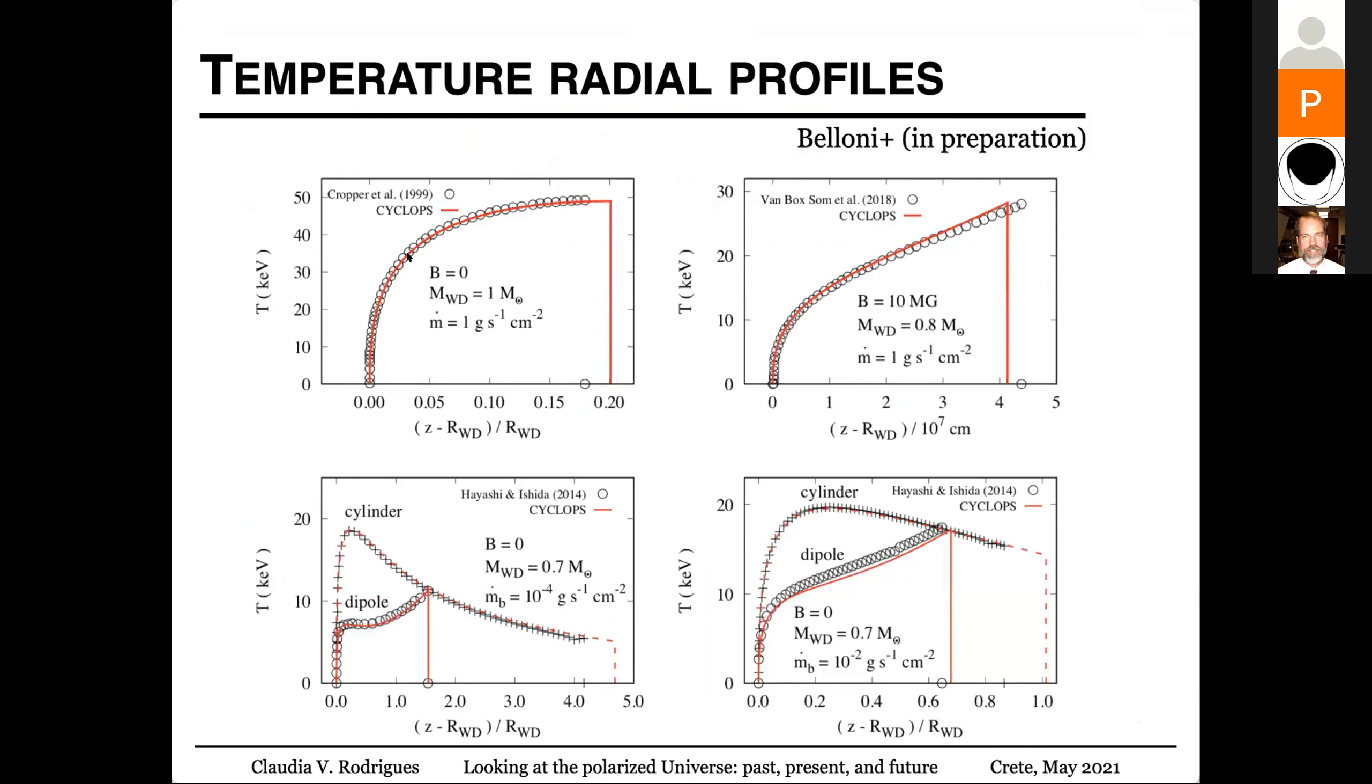And here I show you some figures of a paper in preparation in which we compare the results of our calculation with the previous results in the literature. And as you can see the profile of density and temperature is very dependent on the magnetic field, the white dwarf magnetic field, the white dwarf mass and the mass accretion rate.